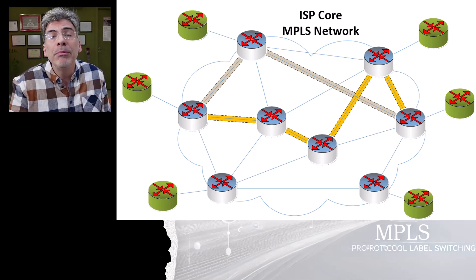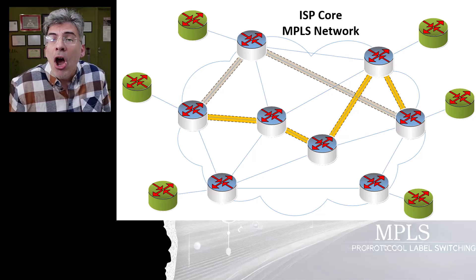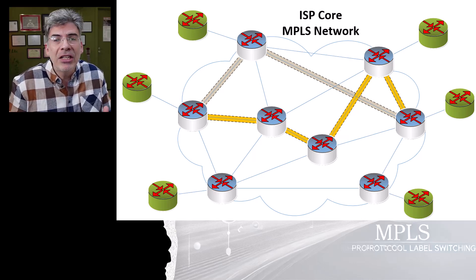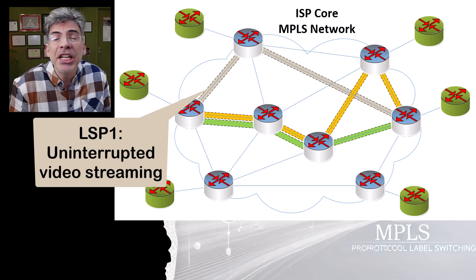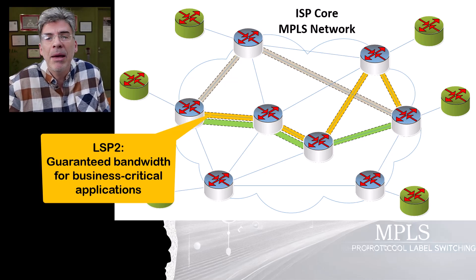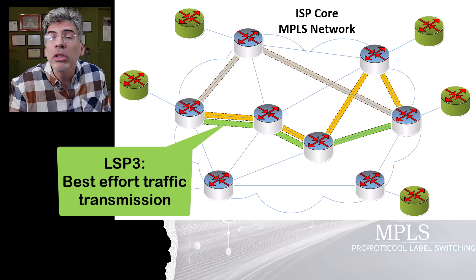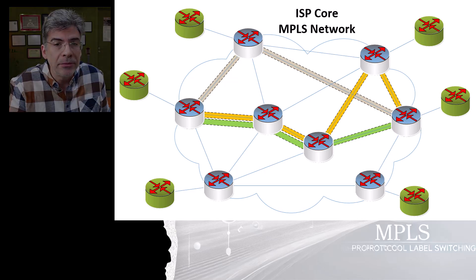As a result, LSPs can meet a whole series of criteria such as bandwidth, latency, and resource availability, ensuring optimal use of network resources while meeting the demands of modern applications that require high performance and reliability. An LSP can be specifically designed based on criteria needed for each customer, each traffic type, or other network thresholds. For example, one LSP can be designed to cater to the needs of uninterrupted video streaming, another to deliver guaranteed bandwidth for business-critical applications, while another may only provide best-effort traffic transmission.